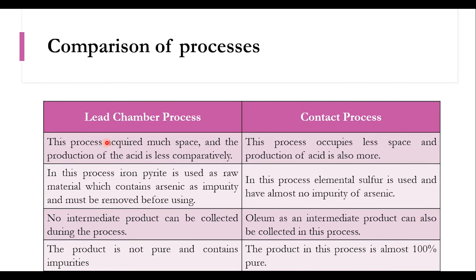There are a total of eight comparisons. Number one: the lead chamber process requires much space and production of acid is less. Comparatively, the contact process occupies less space and production of acid is more. In this process, iron pyrite is used as raw material which contains arsenic as an impurity and must be removed, while in contact process, elemental sulfur is used from ores and is mostly pure without arsenic impurity.